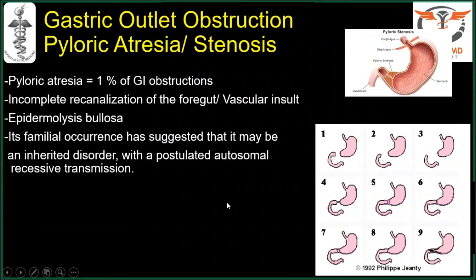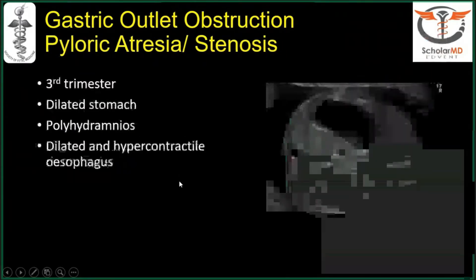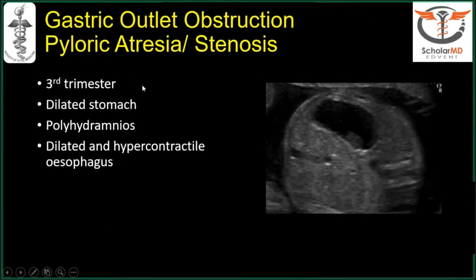As far as gastric outlet obstruction and pyloric atresia/stenosis is concerned, prenatal diagnosis is very difficult and not commonly done. Pyloric atresia accounts for about 1% of GI obstructions. It involves incomplete recanalization of the foregut or vascular insult, and familial occurrence suggests an autosomal recessive inherited disorder. You may suspect it in the third trimester when you see a dilated stomach with polyhydramnios. Because of obstruction at the pylorus or duodenum, you may get retrograde filling of the esophagus — a dilated and hypercontractile esophagus — leading to suspicion of pyloric atresia.